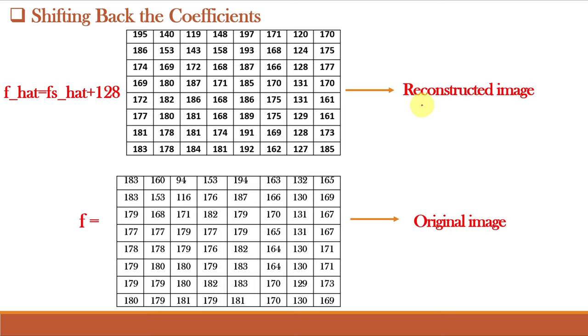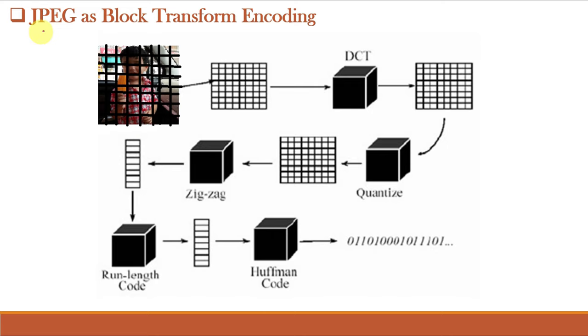And we can see that the resulting reconstructed image is close to the original image. And remember this JPEG coding is a block transform coding which we understood in the previous video class.